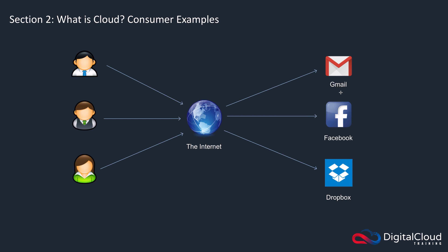With Gmail you get free email, but if you go over a certain amount of storage you have to pay. With Dropbox, you pay for a certain amount of storage, and if you go over that you hit the next threshold and pay a bit more. And as you'll see with the AWS cloud, you pay in a very similar way — sometimes per gigabyte rather than for a fixed amount of storage.